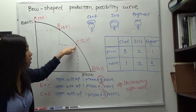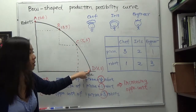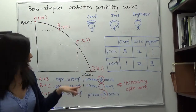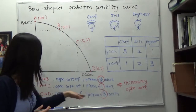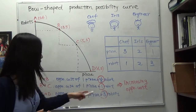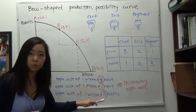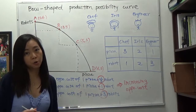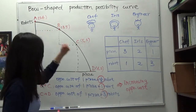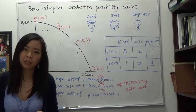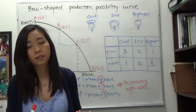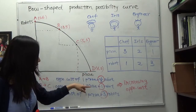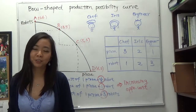Finally, at point C if you still want more pizza, you send the engineer. The engineer increases pizza by one at the cost of three robots, so the opportunity cost of one pizza becomes three robots. The opportunity cost is increasing from one-third robot, to one robot, to three robots. This is why the production possibility curve is bow shaped — workers have different talents and abilities, so as you increase the amount of one good, the opportunity cost in terms of the other good keeps increasing. Thanks for watching and good luck with your studying!